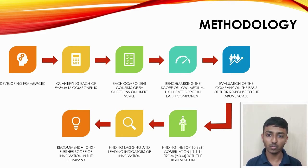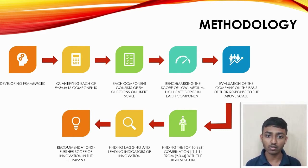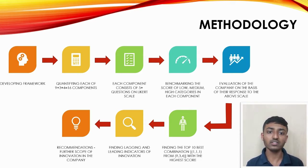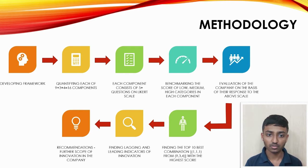Rather than quantifying all 108 combinations, we focused on 16 elements — nine plus four plus three — because any combination consists of three of these 16 elements, so all 108 combinations get quantified automatically. Each of the 16 elements will be quantified using a Likert scale, and scores will be collected based on questions asked to the organization. We will take ten prominent examples to explain element combinations, then focus on lagging and leading components to provide recommendations to the organization.